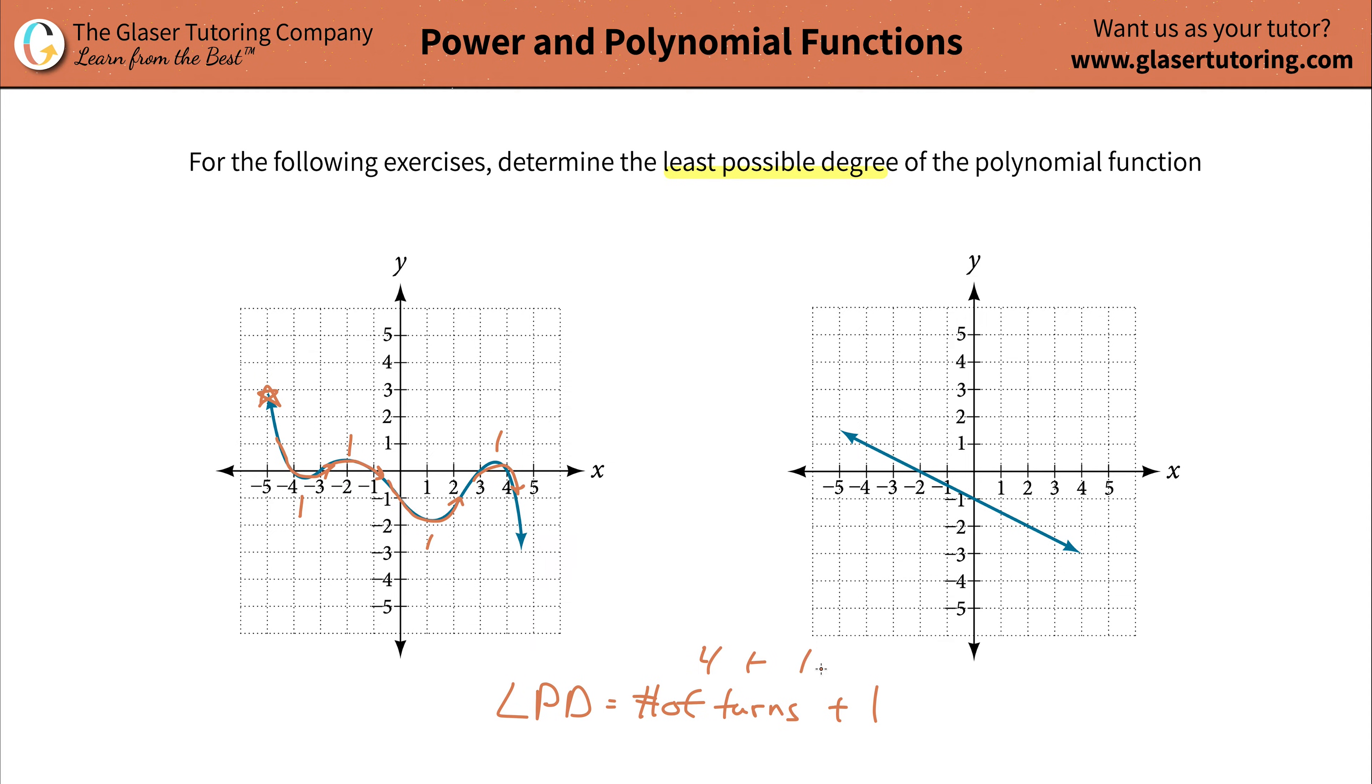So if there's four turns, add one to it, so your least possible degree is going to be five. And that is it. So it's some type of x to the fifth function. It's not going to be just x to the fifth by itself, but it might be x to the fifth plus, you know, x to the fourth, whatever, with a two here. Who knows? But it's some fifth degree.